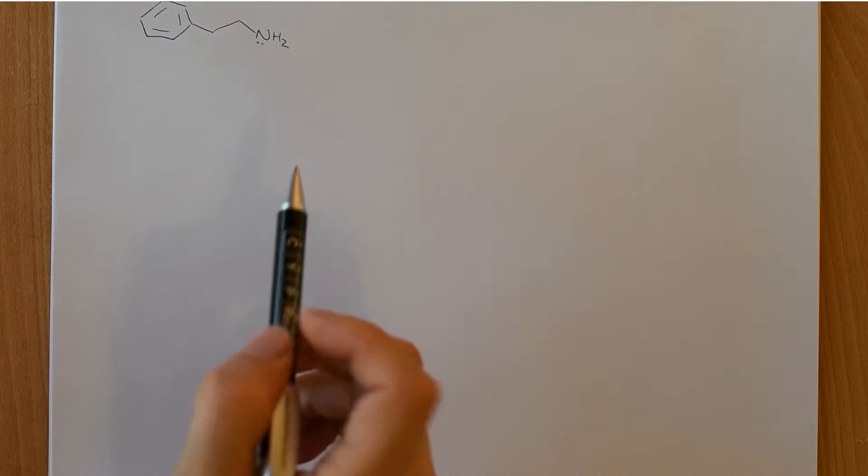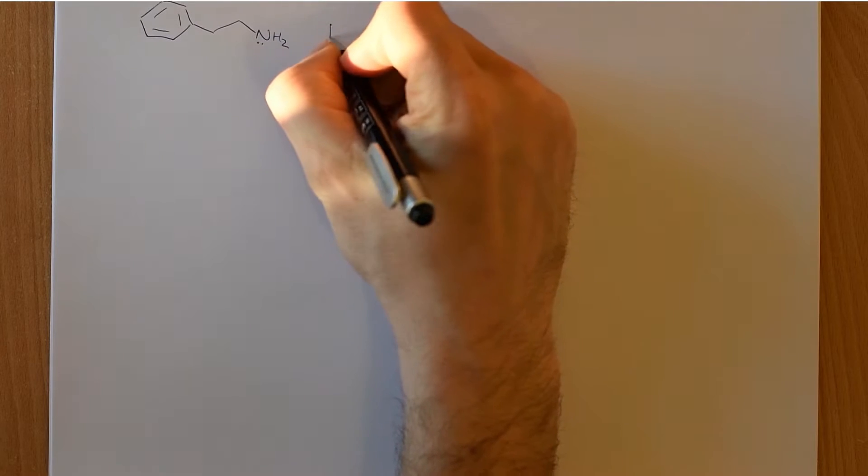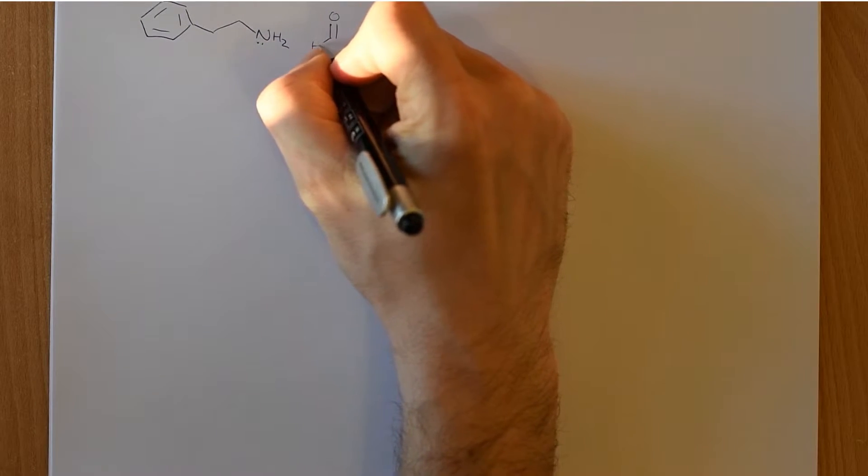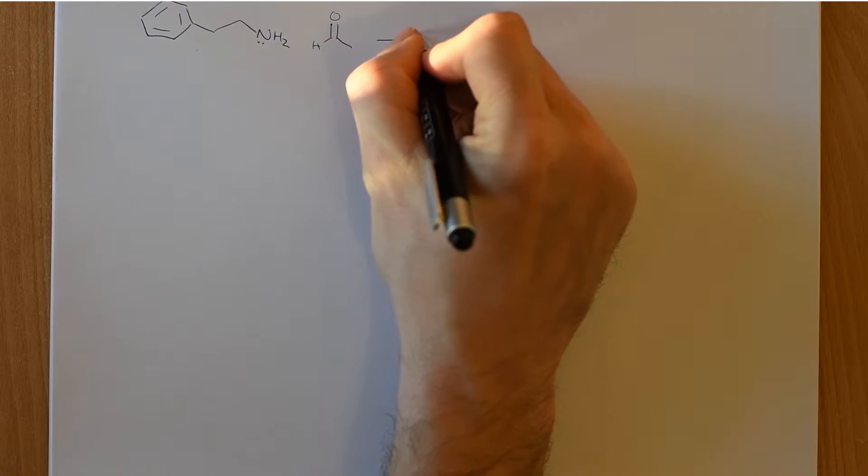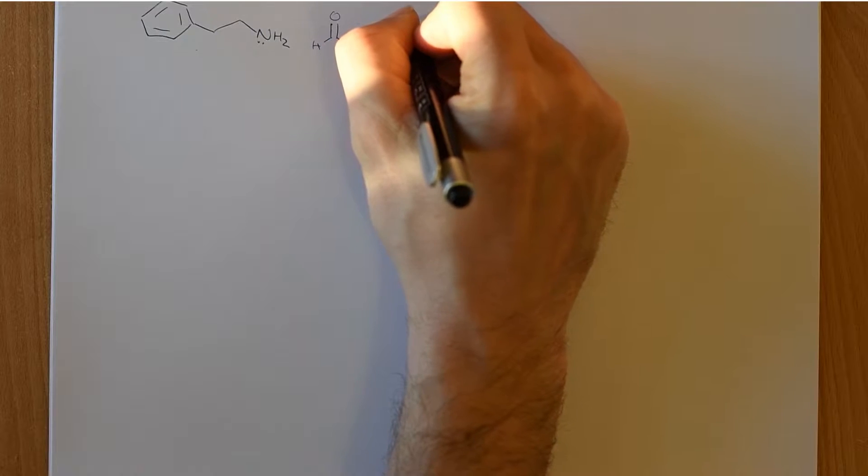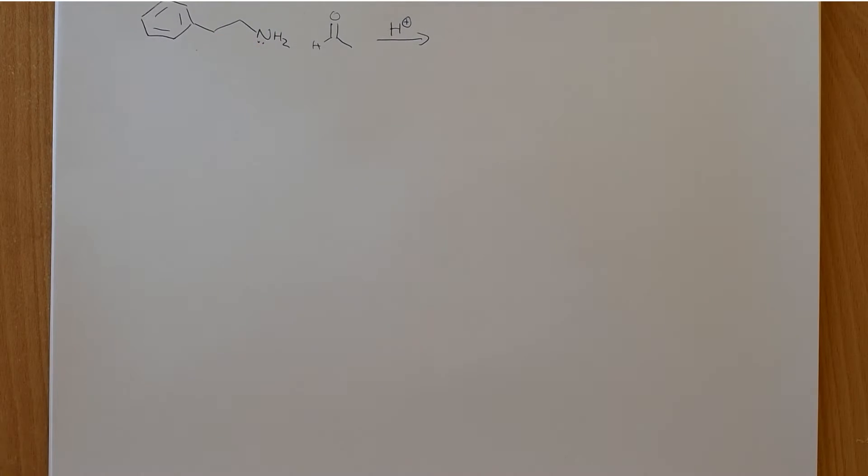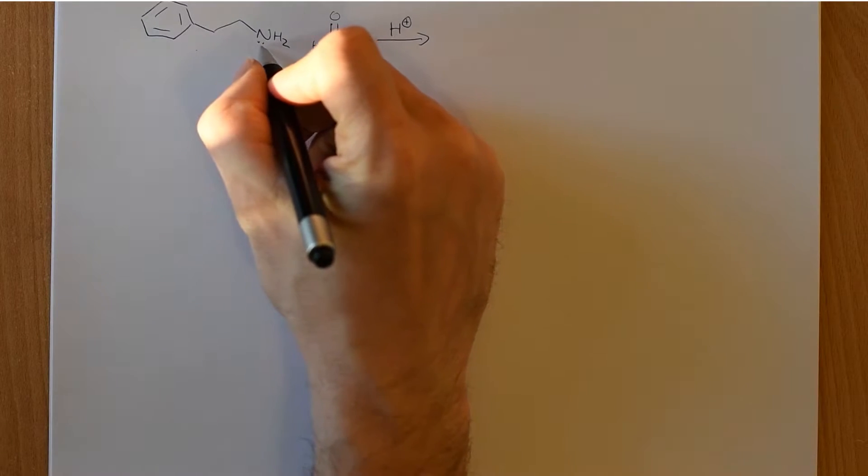It can also work for secondary amines. So this reacts with an aldehyde or a ketone and we are going to use phenylethylamine and acetaldehyde to demonstrate the reaction and it occurs in the presence of catalytic acid. So your catalytic acid can be any of a number of acids. Para-toluene sulfonic acid often works well but there are lots of different possibilities.